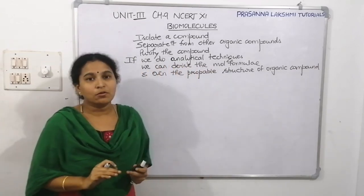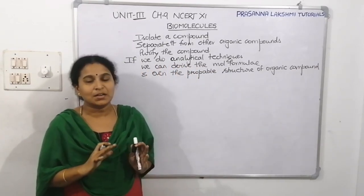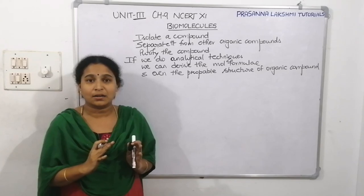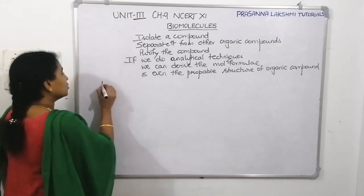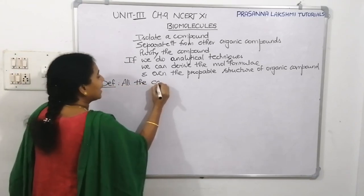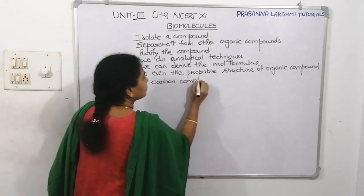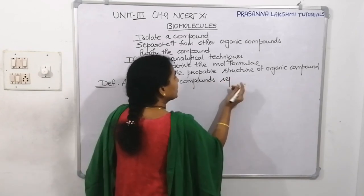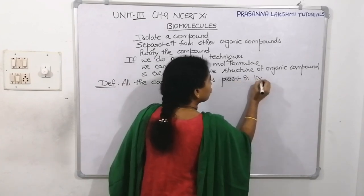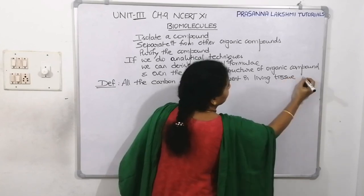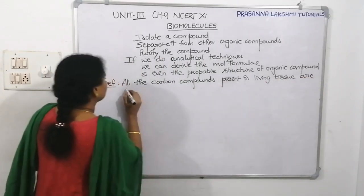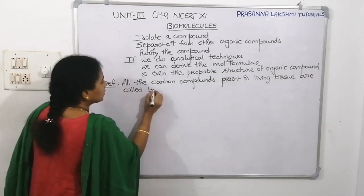Through this experiment we came to know how many organic compounds are present in a living tissue. Thus we can say that all the carbon compounds present in living tissue are called biomolecules. Finally, we got a definition: according to NCERT, biomolecules are all the carbon compounds present in living tissue.